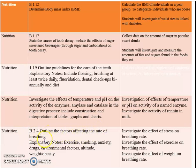The next objective is to outline the factors affecting the rate of breathing. They can look at exercise, smoking, anxiety, drugs, environmental factors, altitude, weight, and obesity. Students can investigate the effect of stress on breathing rate, the effect of exercise on breathing rate, and the effects of weight on breathing. For persons who are obese or who have gained a lot of weight, they can use a questionnaire to ask them certain questions about their breathing.